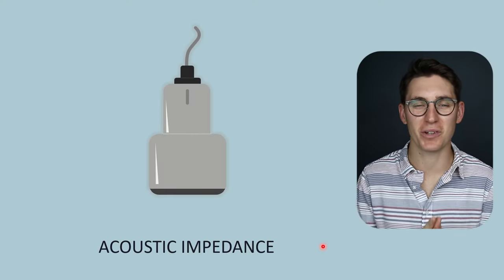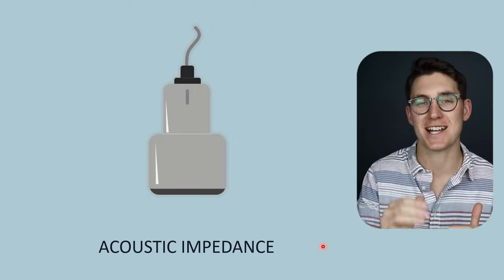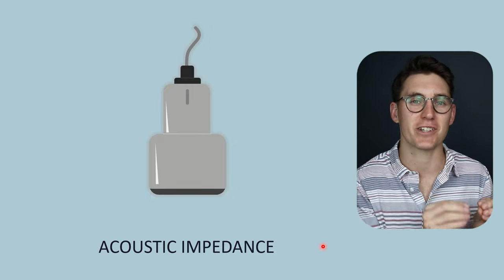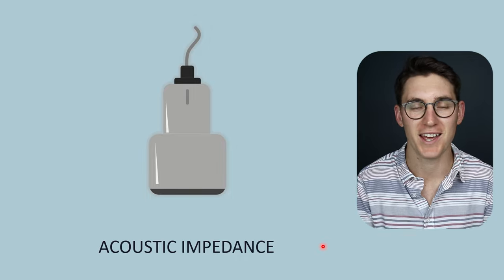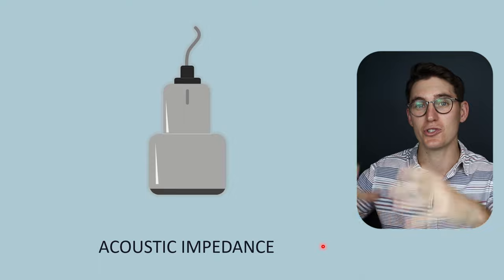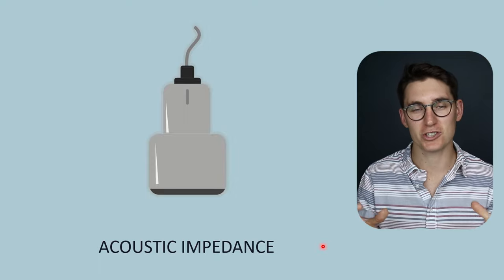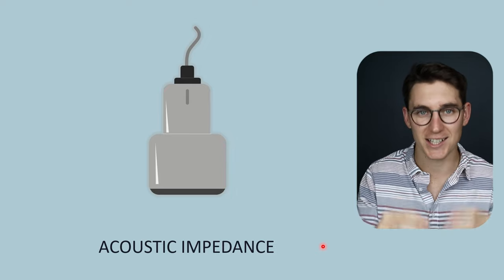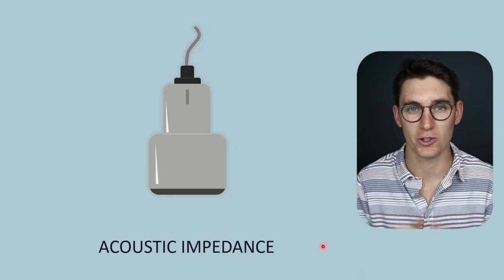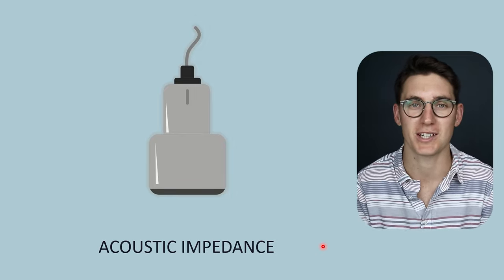Welcome back. By now we've looked at different parameters that we can use to describe a sound wave, and we've looked at certain parameters specific to pulse echo ultrasonography — the type of ultrasound we use to generate an image displayed on a screen. Now we're going to look at how those ultrasound pulses interact with matter, with the tissues within our patient. To understand these interactions, we need to understand a concept known as acoustic impedance.